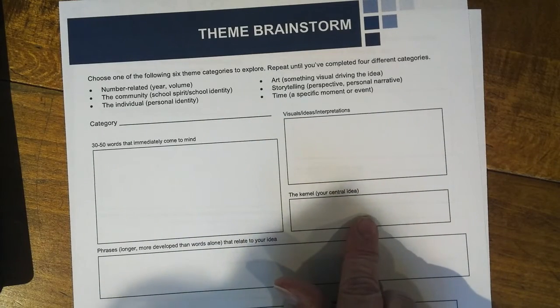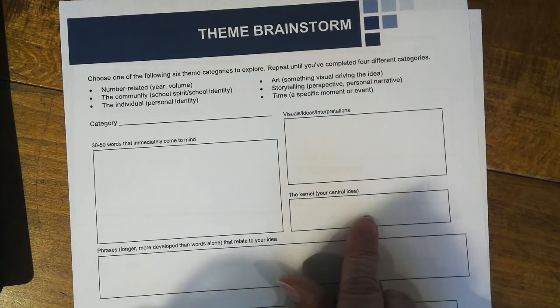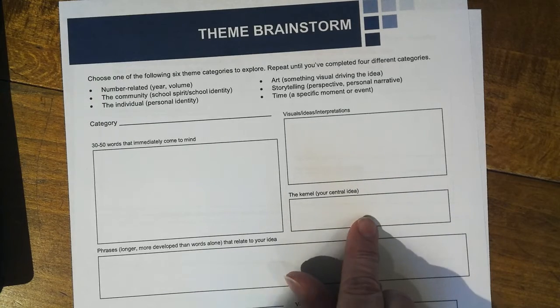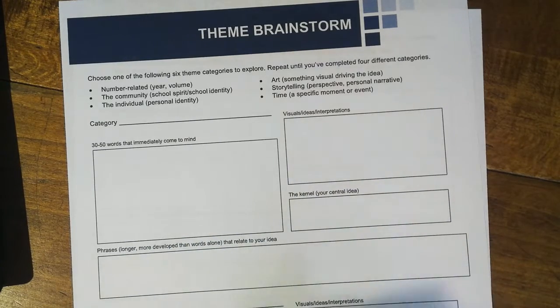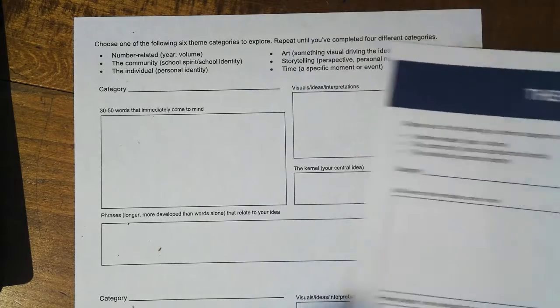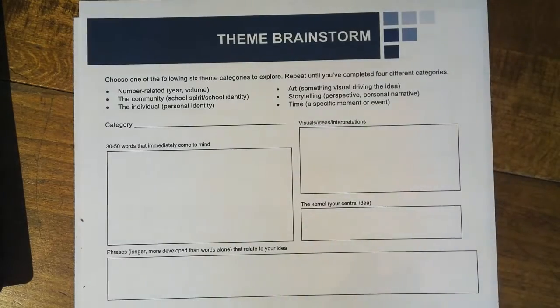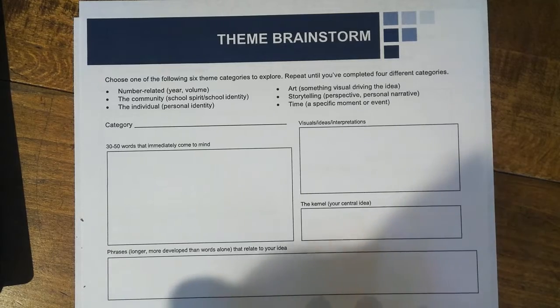These don't have to be fully fleshed out. What I'm going to do is pick the best ones, then put a link to a Microsoft form so you guys can vote for the theme for next year, and we'll go from there. You can print this out, handwrite it, take pictures of it, and email it to me. This will be week one's work for you, and this is a completion grade.